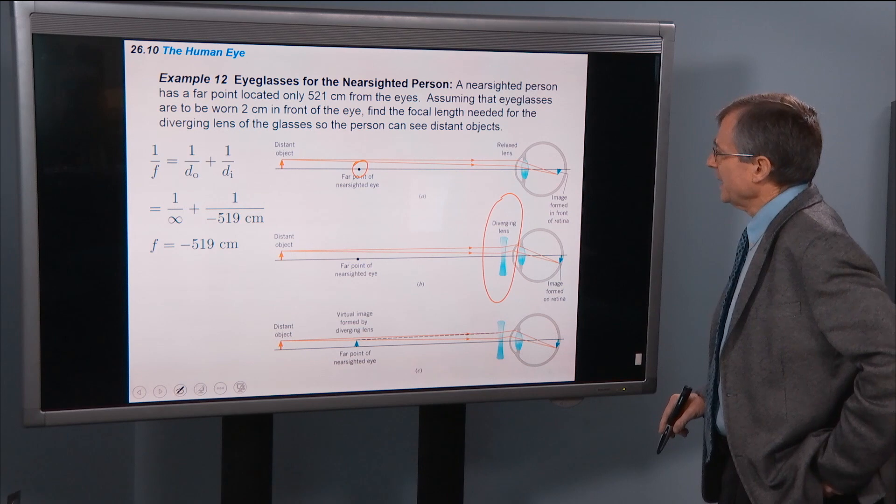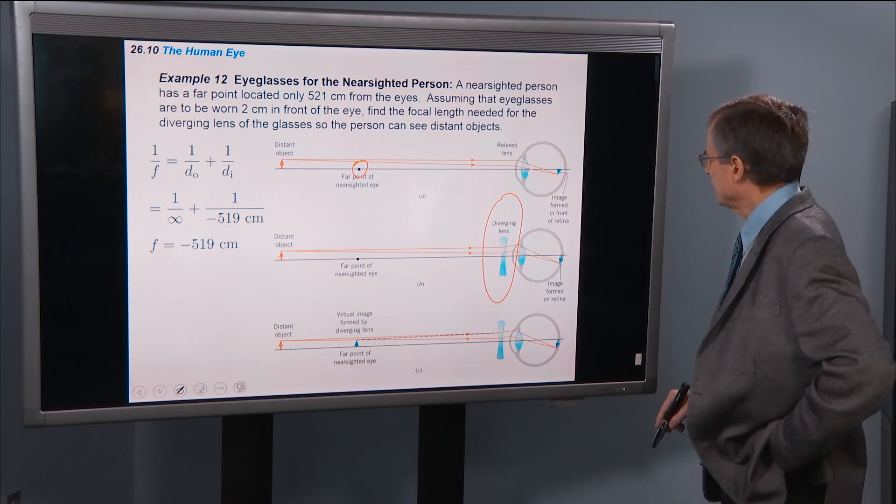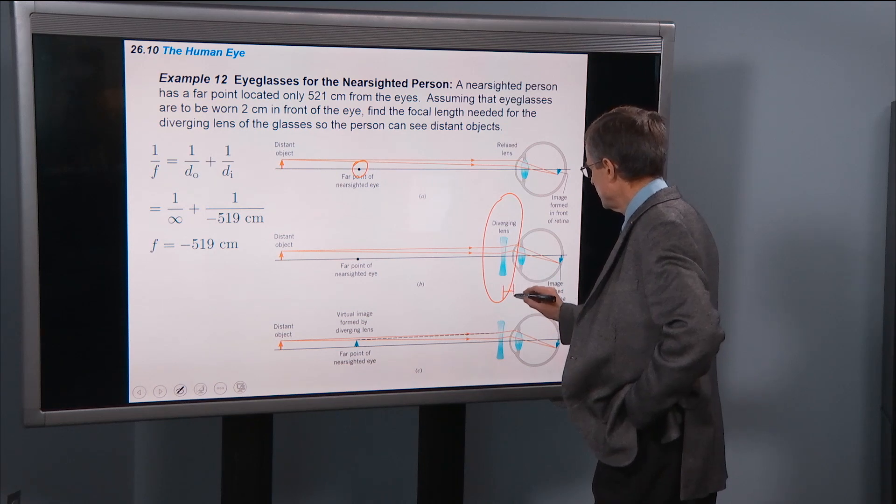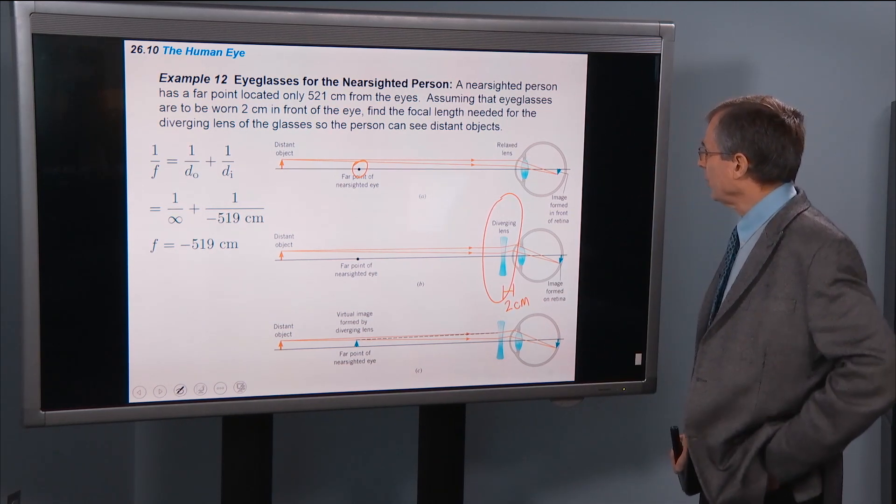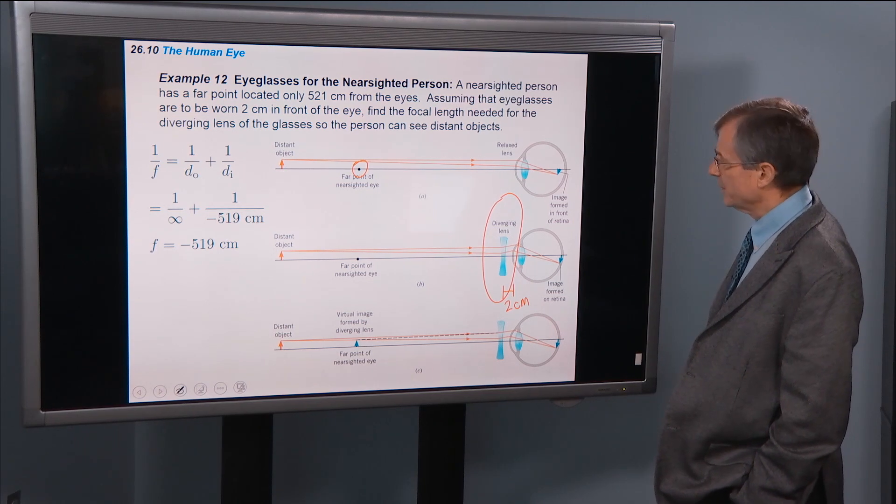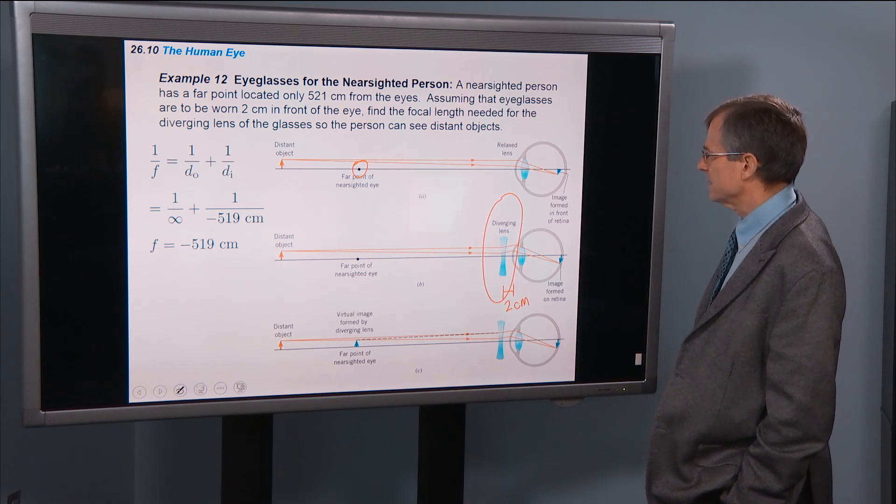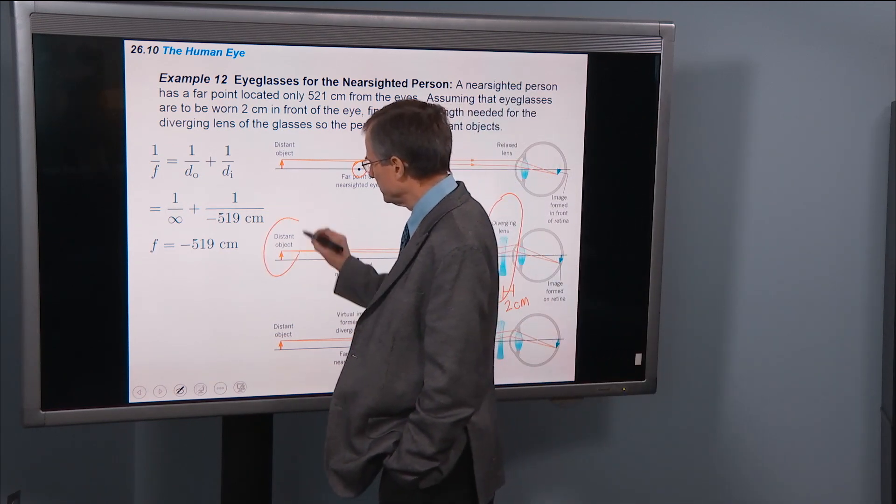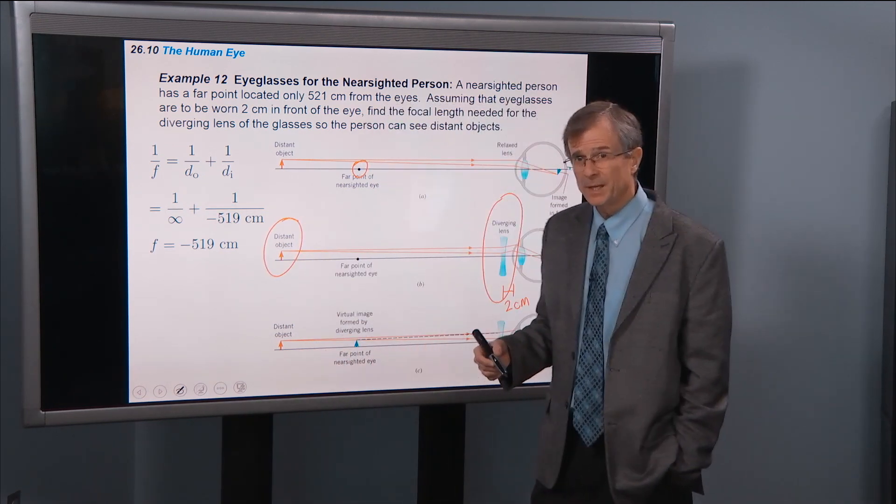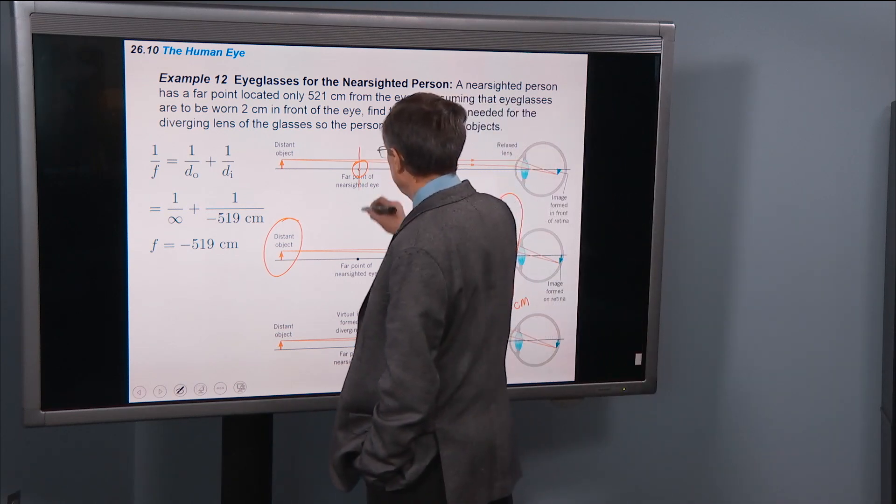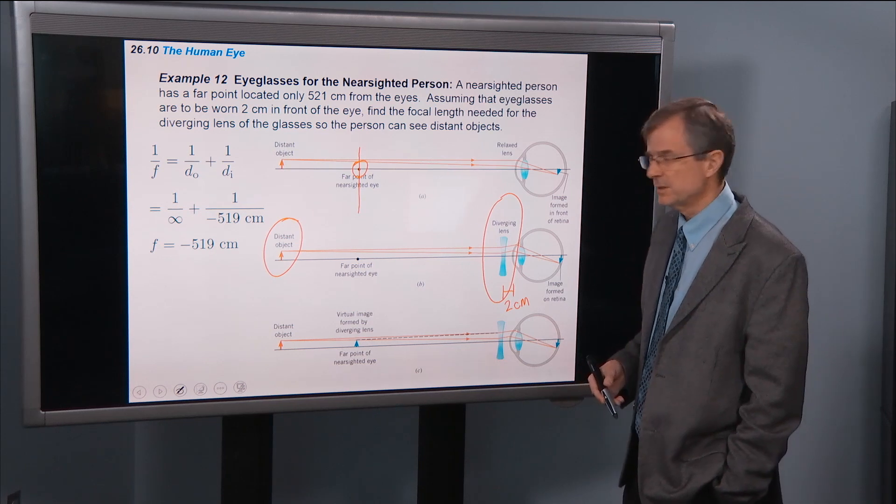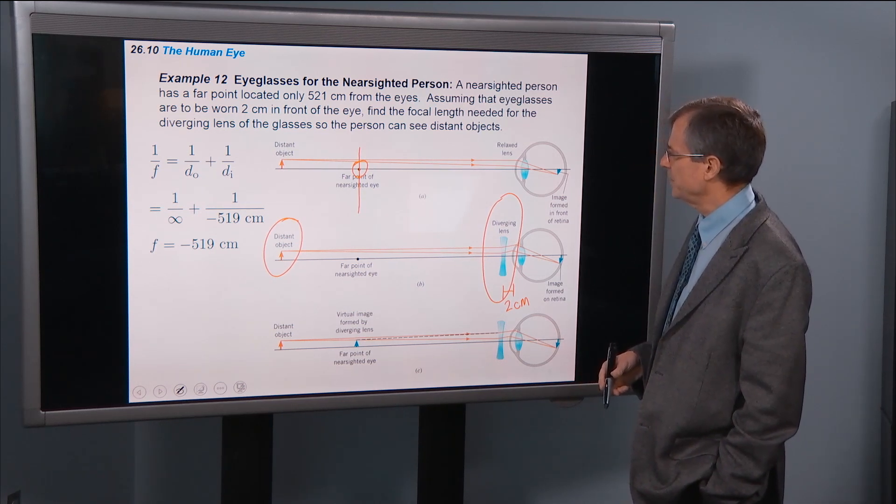Find the focal length needed for the diverging lens of the glasses so that the person can see distant objects. So you want an object, you want to be able to see objects at infinity. You don't want to be stuck only being able to clearly see objects that are 521 centimeters from the eye.